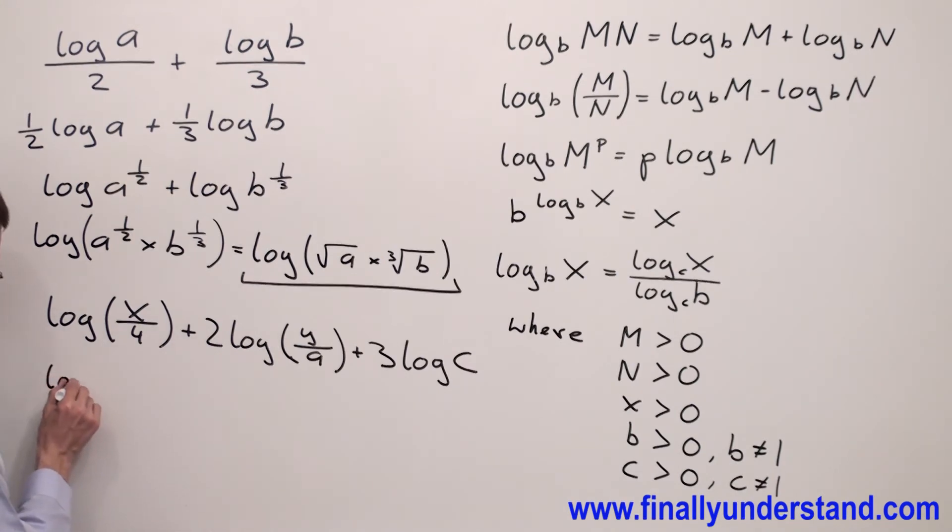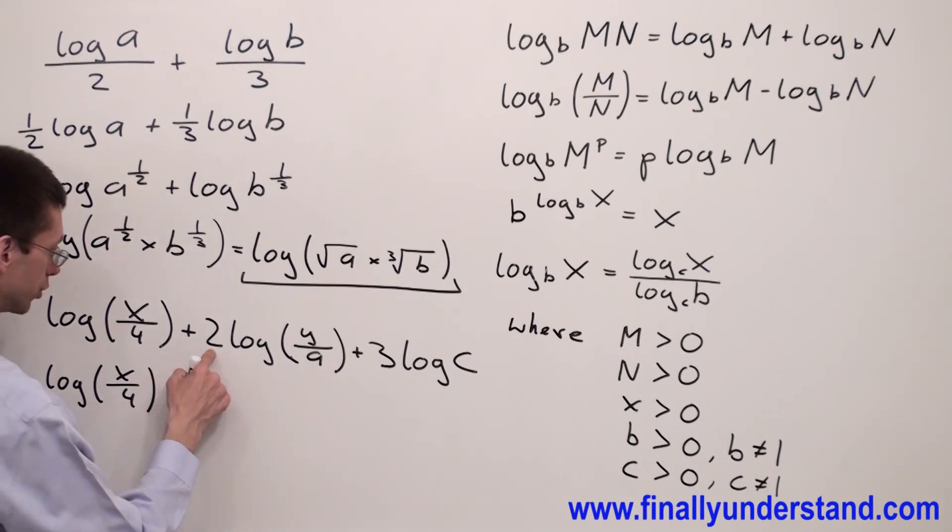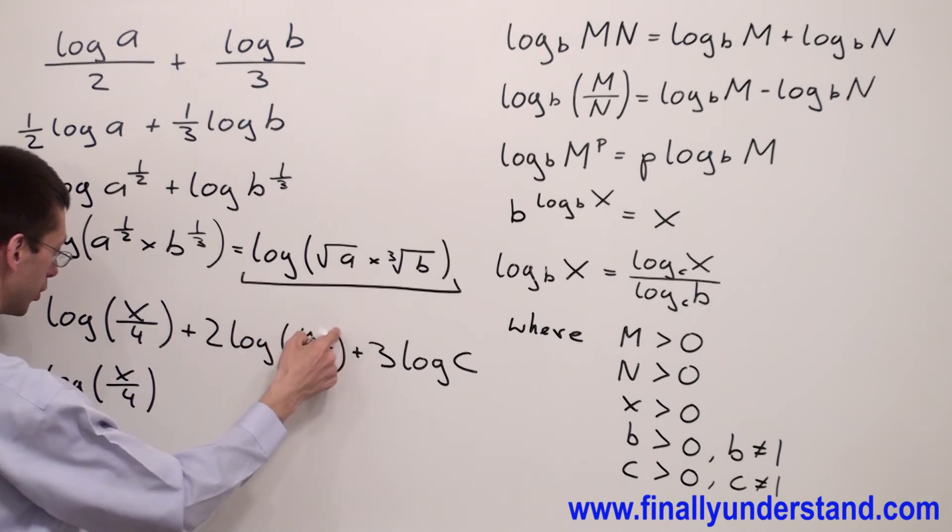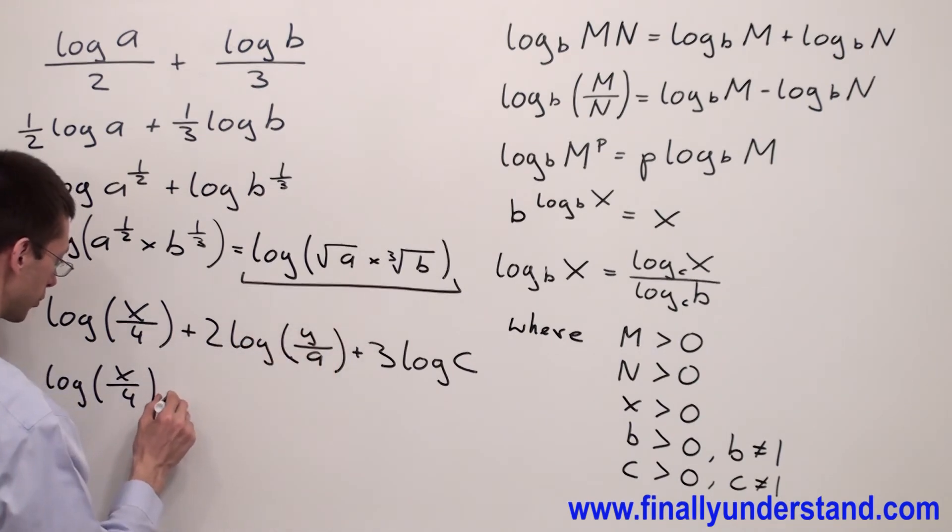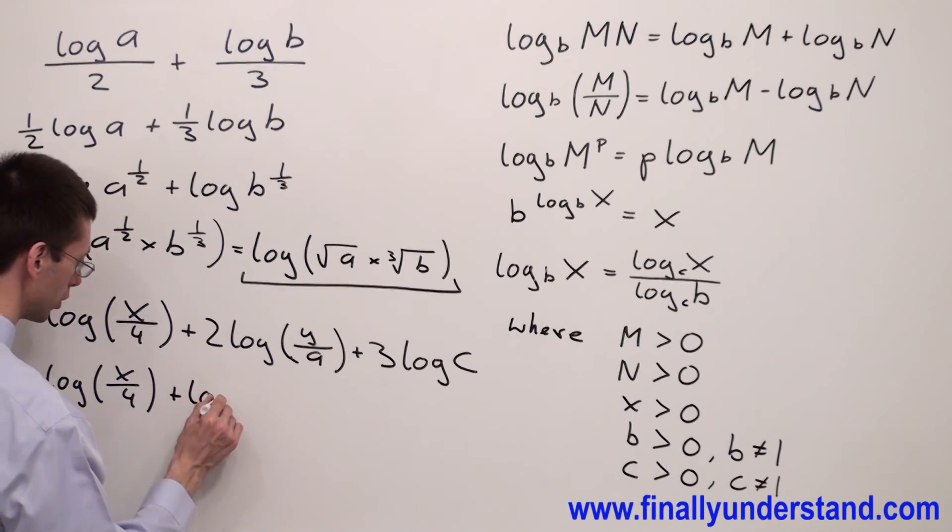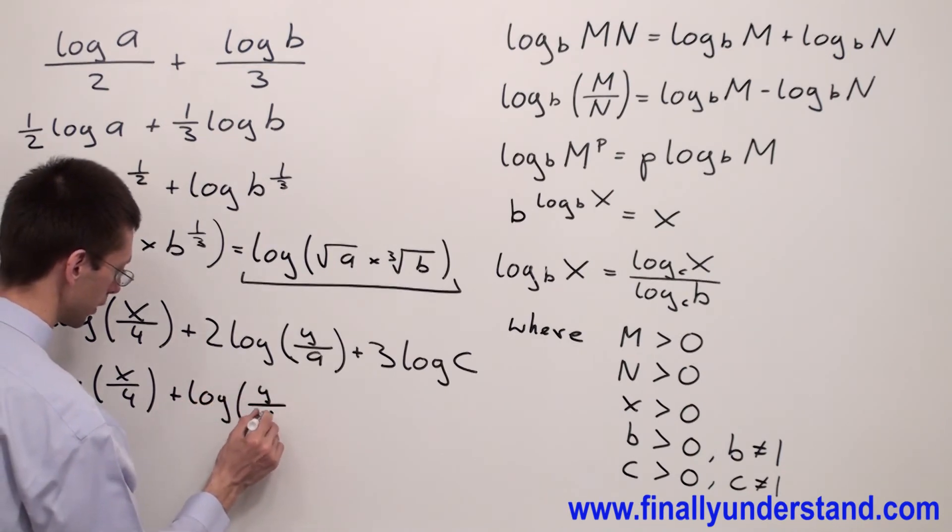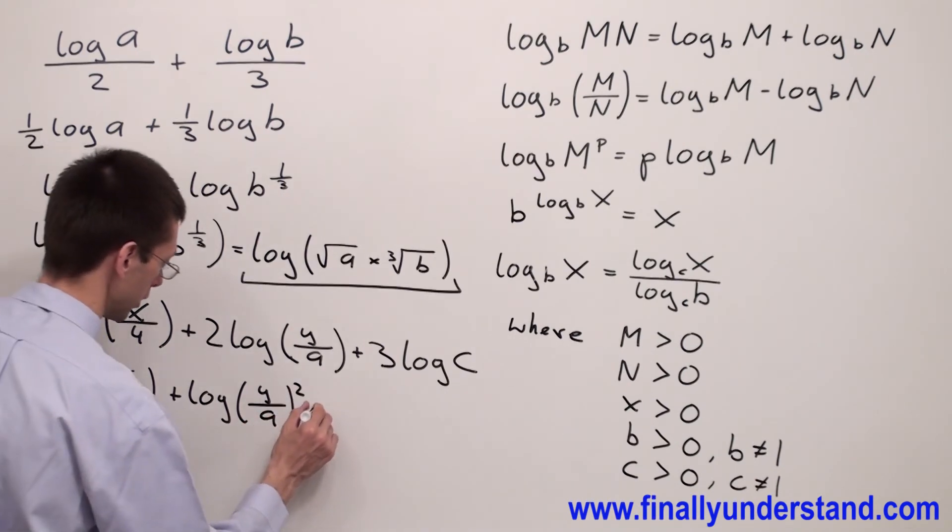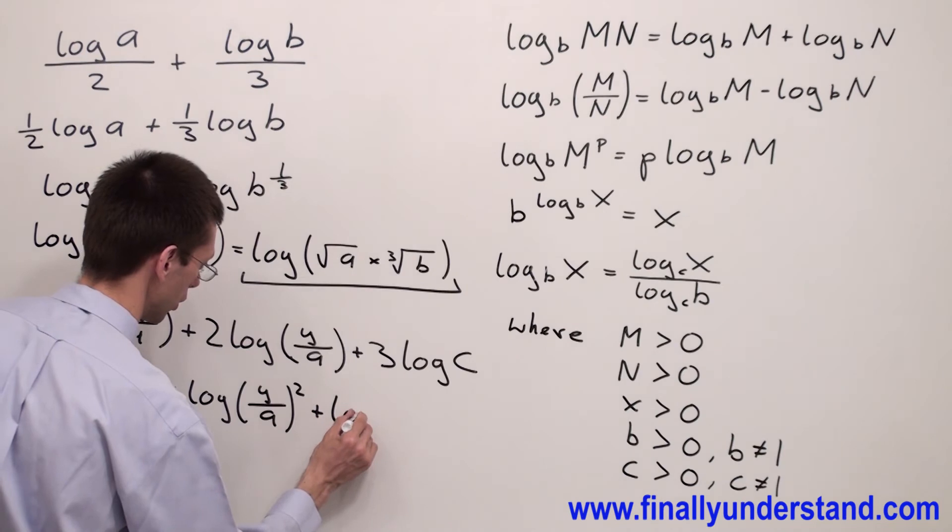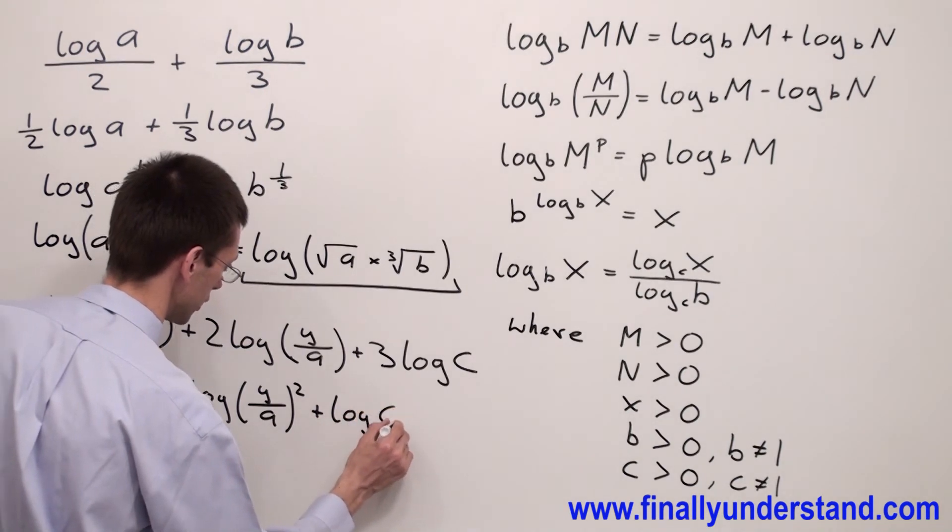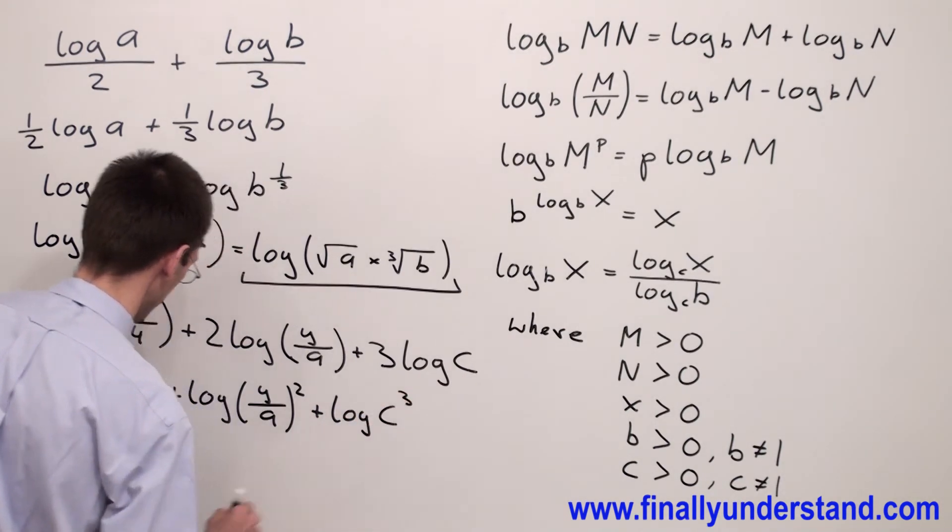I'm going to have log x over 4. And this 2 is going to be my exponent outside of the parenthesis plus log y over a to the second power plus log c to the third power.